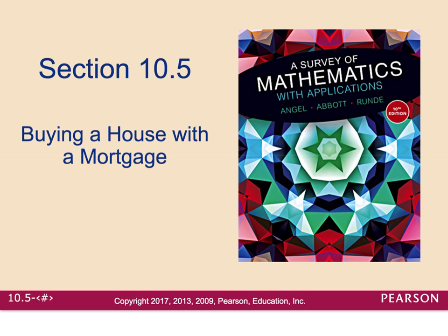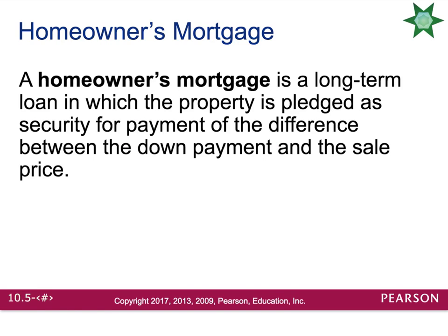Section 10.5 is all about buying houses with a mortgage. We're going to talk specifically about two different types of mortgages, although there is much more than these two. A homeowner's mortgage is just a long-term loan in which the property is pledged as security for payment of the difference between the down payment and the sales price of the house.